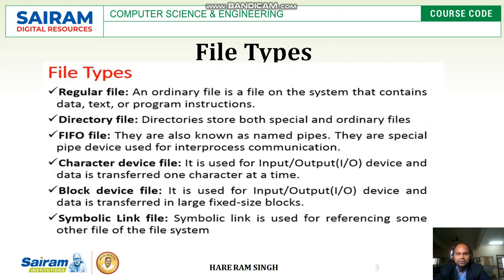First of all, let us have a glance at types of files. There are six types of files in Unix. The first one is a regular file. It is a file which contains any data, text, or program instructions — like a C program, C++ program, or any text you write. That is called a regular file or text file.